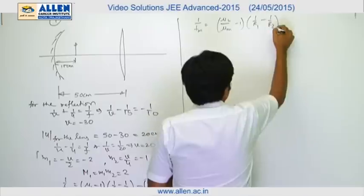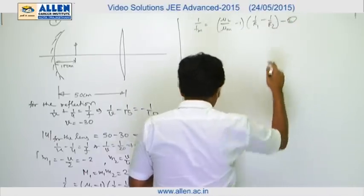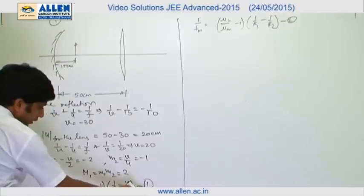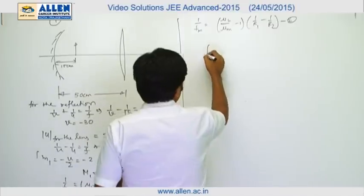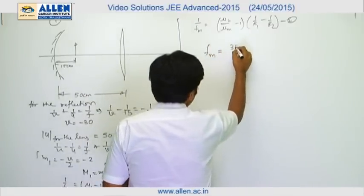On solving equation 1 and 2, we get focal length of the lens in the medium as 35 by 2 centimeter.